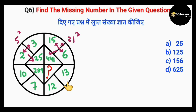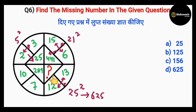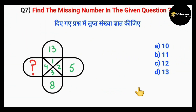Pattern cracked: add the two numbers, then square the result — that's the missing number. So: 12 plus 13 equals 25, and 25 squared is 625. The missing number is 625, so option D is correct.